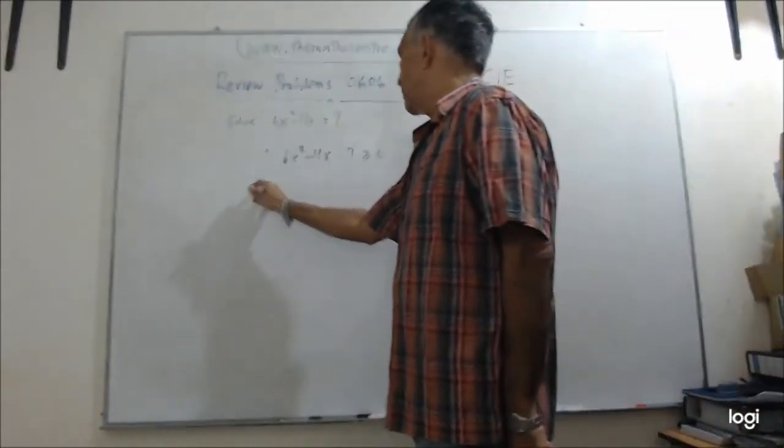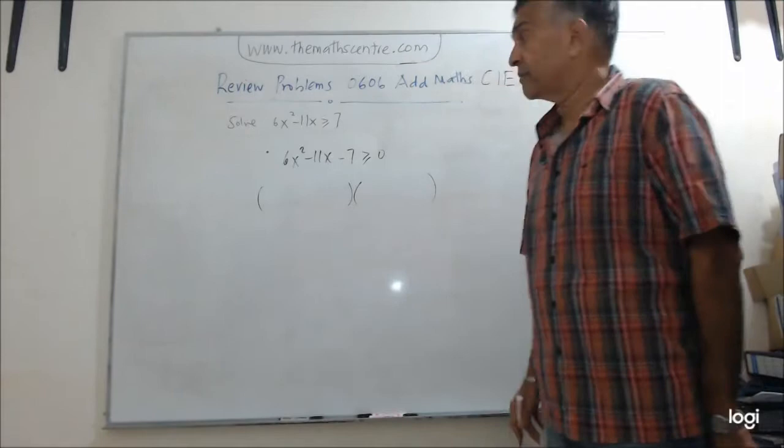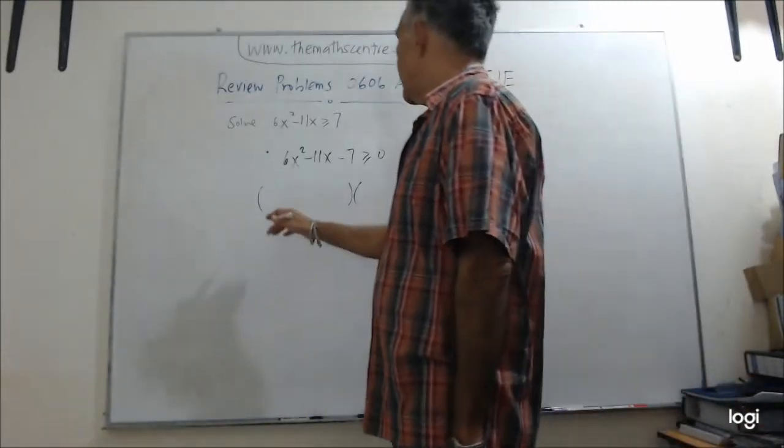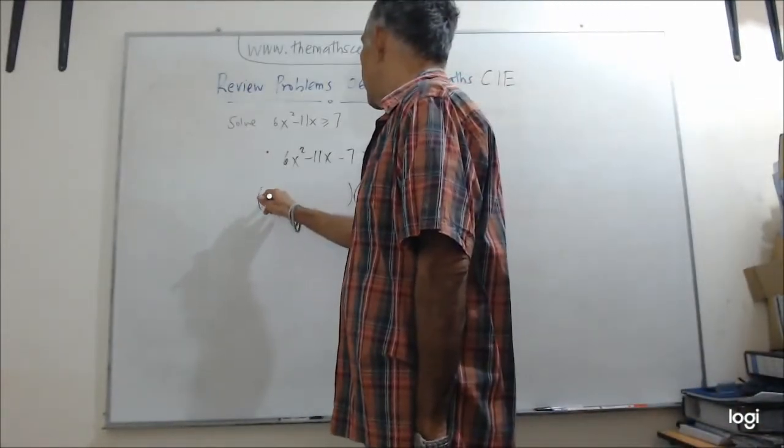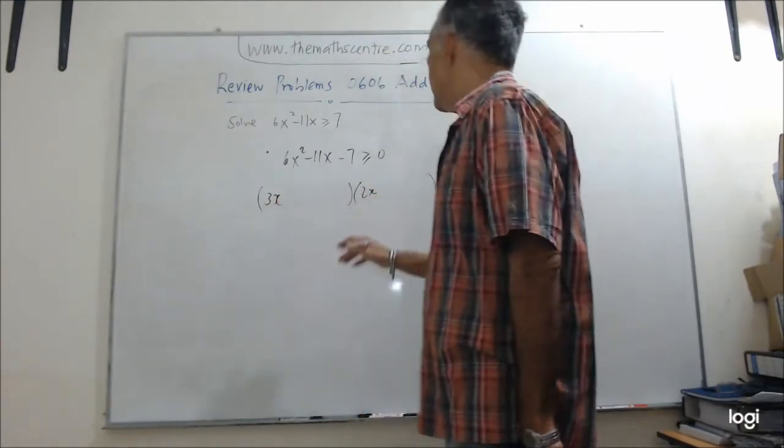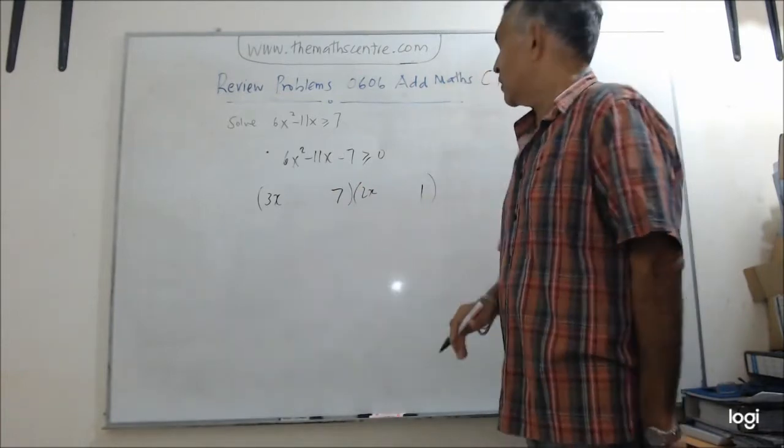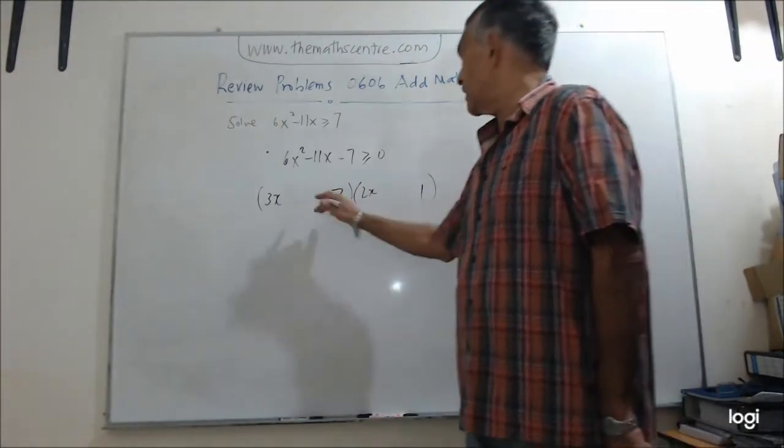Next step, we have factorization. So I have 3 and 2. Let me try it first, 3 and 2. Maybe I will try a 7 and a 1. So I have -14 + 3. Looks good.